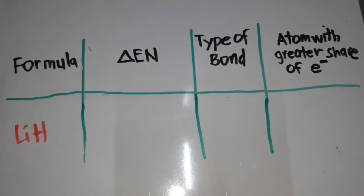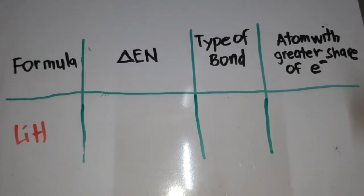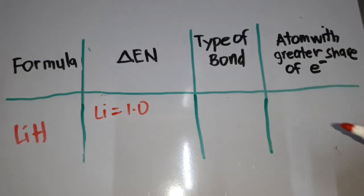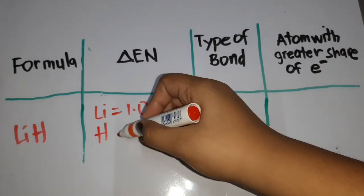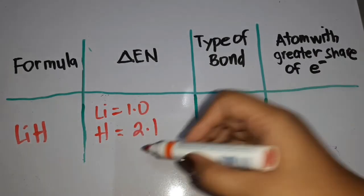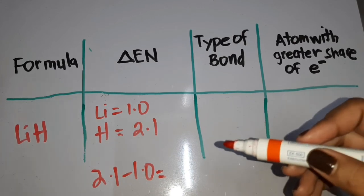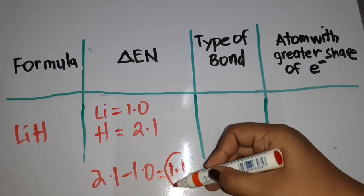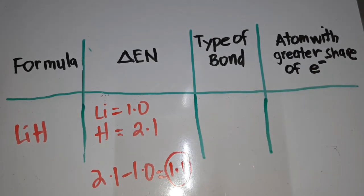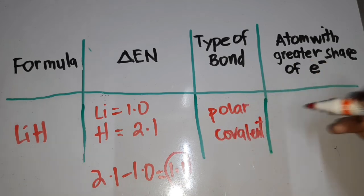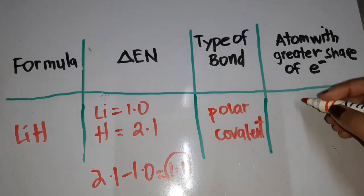For another example, we have lithium and hydrogen. Lithium has an electronegativity of 1.0 and hydrogen is 2.1. The solution is 2.1 minus 1.0, giving an electronegativity difference of 1.1. Since 1.1 is between 0.5 and 1.7, it is a polar covalent bond, and the atom with the greater share of electrons is hydrogen.